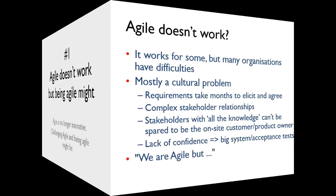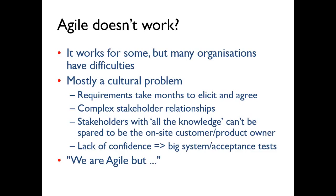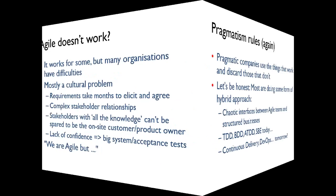We've all met teams that say things like: 'We are agile, but we only meet our stakeholders once a month.' Or 'We are agile, but we deliver big releases every three months.' There's a lot of that going on — people compromising what pure agile is, because agile cannot be dropped into the context of a more traditional business very easily. What happens is companies make use of what works and discard what doesn't, using some kind of hybrid approach.